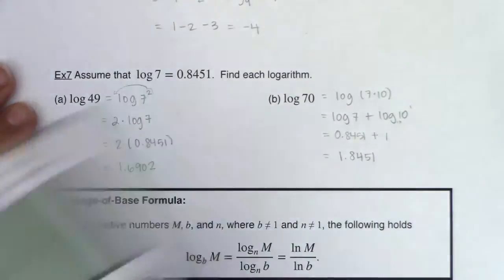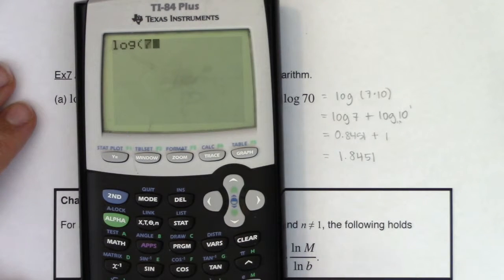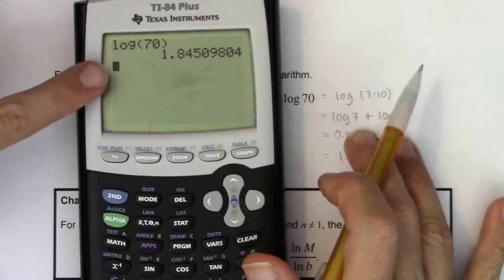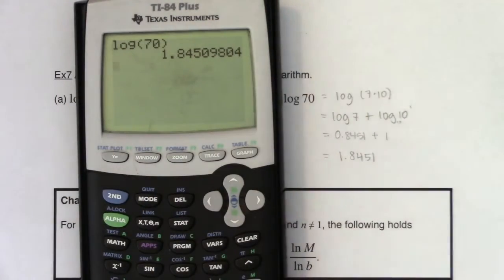Alright, and let's check it. Let me clear this out and let's do log of 70. Alright, 1.8451, and I got this number without using my log button. I know I checked it with my log button, but you saw me, I did the problem without my log button.